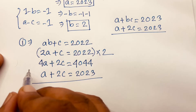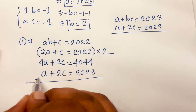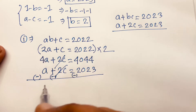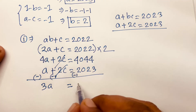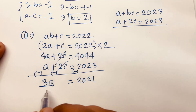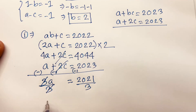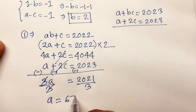Now I subtract both equations. Multiplying the first by 2 gives 4A plus 2C equals 4044. Subtracting the second equation A plus 2C equals 2023, the 2C terms cancel, giving 3A equals 2021. Dividing both sides by 3, A equals 2021 over 3, which is approximately 673.67.